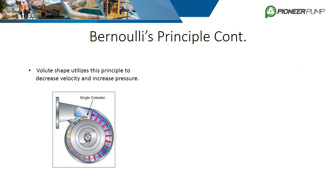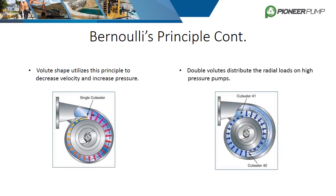The pump volute gradually increases its internal area from the cut water to the discharge. This increase in area slows the liquid velocity down and increases the liquid pressure. As the images show, one side of the impeller sees far more pressure than the opposite side. To remedy this on high pressure pumps, a double volute can be used. Double volute casings have two cut waters located 180 degrees apart from each other to balance the radial loads. Pioneer has utilized a double volute design in several high pressure pumps.